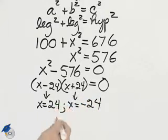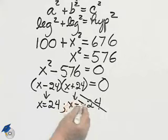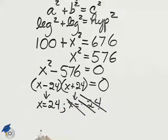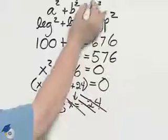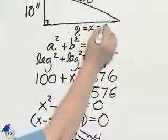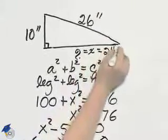But my friends, remember, this is a right triangle, and we don't have negative sides. So on this triangle, the missing side will be 24 inches.